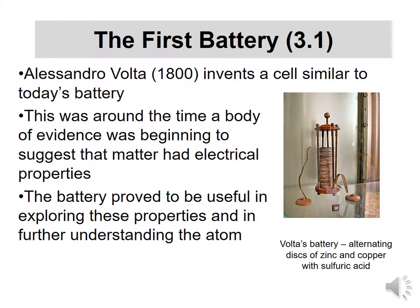If you hook this thing up, put sulfuric acid in here, and use this as one electrode and this as the other electrode, this is a battery generating some voltage. You can imagine your cell phone wouldn't be what it is today if this were the battery inside — it would look much different. So this is an initial look at a battery.